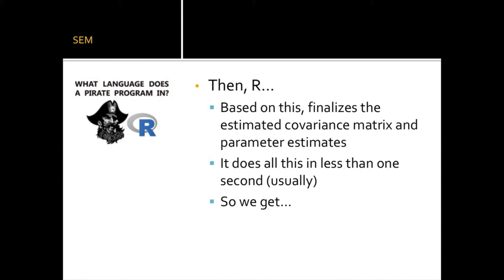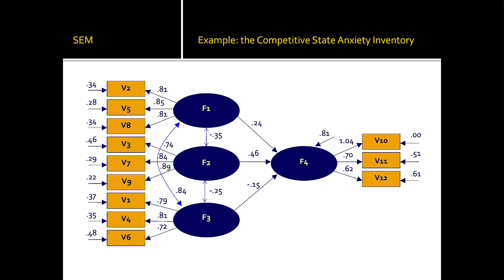Parameter estimates get plugged into the model, and R runs this in usually less than one second. All the star values have turned into numbers, thanks to R. You can refer to my separate R video on how to type in the right code to get all these numbers to come through.